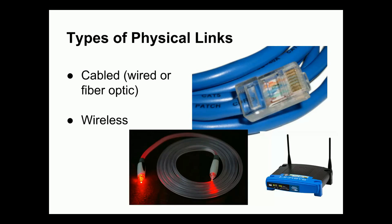There are many types of physical links, which we can categorize as either cable links or wireless links. A cable link has some kind of cable running between the devices. Here I have a category 5 patch cable, which can be used with wired Ethernet networks and uses 8 pieces of copper wire to transmit data. Here I have an example of a fiber optic cable, which transmits light through a flexible piece of glass or plastic. And here I have an example of a wireless device that uses a couple of antennas to transmit data over radio waves.